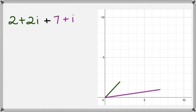Now adding these two complex numbers, I would actually get 9 plus 3i. And if I draw this 9 plus 3i, I'm going to draw it as a pink line here. That's 9 plus 3i.